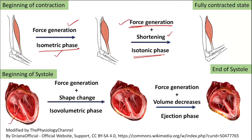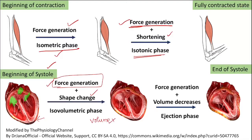At the beginning of systole, both the inlet and outlet valves are closed — in the right ventricle the tricuspid valve and pulmonary valve are closed, and in the left ventricle the mitral valve and aortic valve are closed. But the action potential has arrived and the ventricle begins to generate force. They contract, generate force, and there is a shape change in the ventricular chambers, but the volume does not change because both inlet and outlets are closed. To open the outlet, a higher pressure must be developed — this is called the afterload.